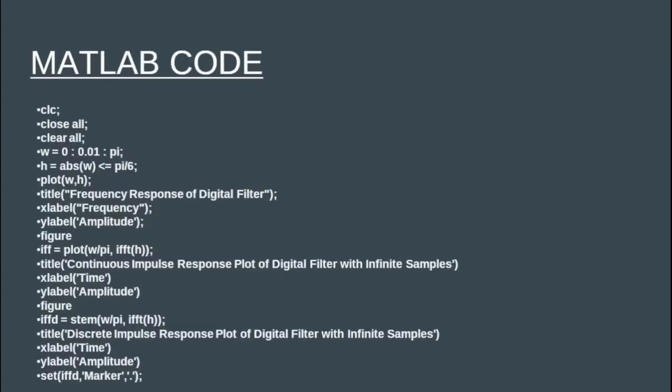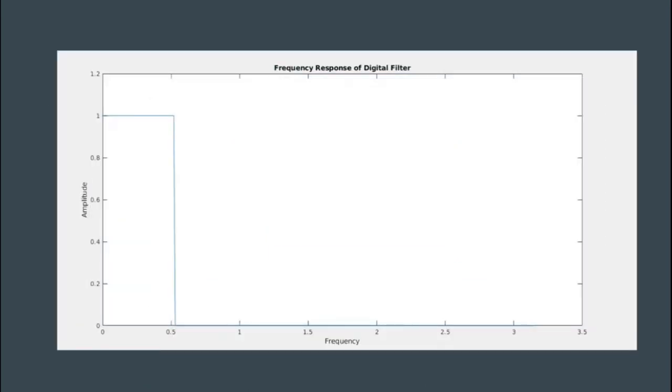Now let's solve this problem using MATLAB. First, we define the values of omega from 0 to π with an interval of 0.01. In Step 1, we plot the frequency response of the ideal filter. We define H as abs(omega) ≤ π/6. For all values of omega ranging from 0 to π/6, H is set to 1, and for all other values it is set to 0. Plotting H with respect to omega gives a graph where the amplitude is 1 for 0 to π/6, and 0 for all other values.